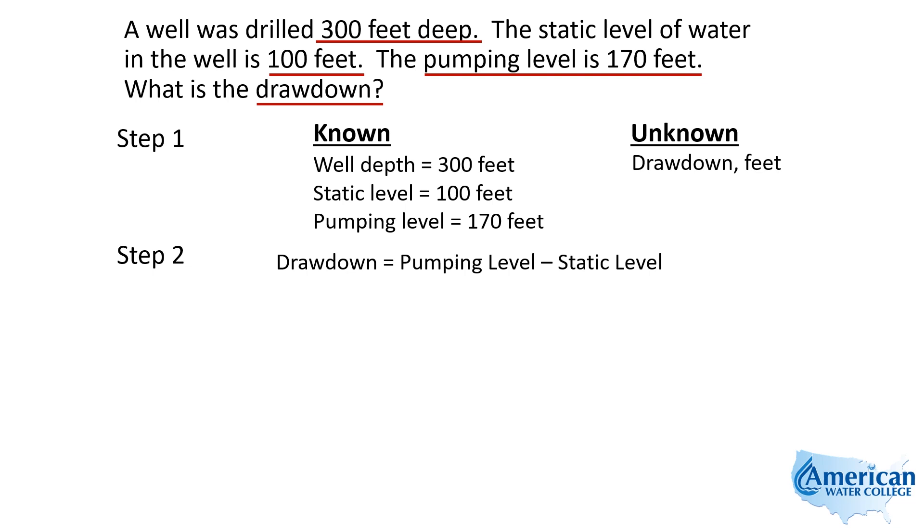Our drawdown formula will simply be the difference between pumping level and static level. So drawdown equals your pumping water level minus your static water level. We don't have to rearrange this because we're already set up to calculate drawdown, which is what we're looking for.